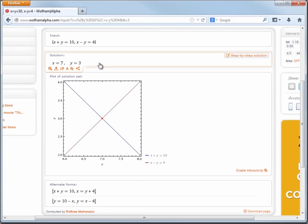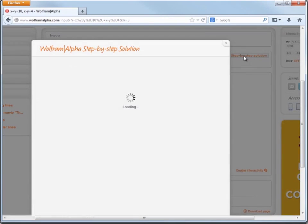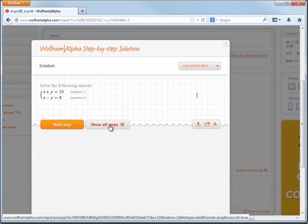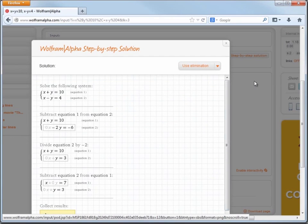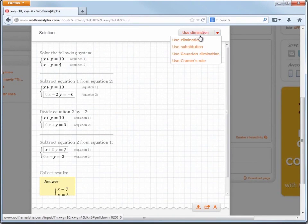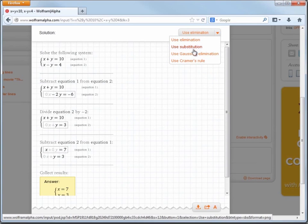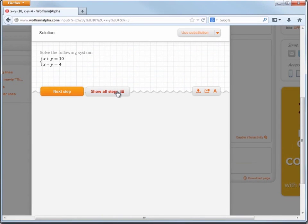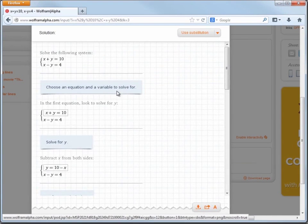And what's really cool is up in the solutions pod, we have this nice step-by-step button where we can actually see the steps to obtain the answer. So here we're solving by elimination. But what's really cool is up in the top right, we can pick our method. So let's say I want to solve by substitution instead. Not a problem.